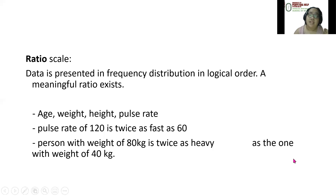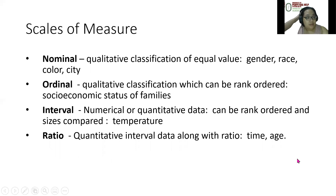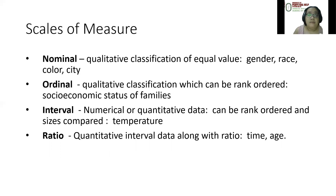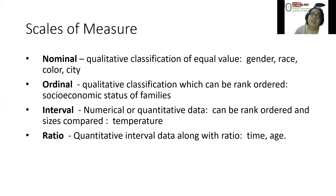Remember the difference between interval and ratio. In summary, nominal is the qualitative classification of equal value — gender, race, color, city. Ordinal is a qualitative classification which can be rank ordered, such as socioeconomic status of families. Interval is numerical or quantitative data which can be rank ordered and sizes compared, such as temperature. And ratio is quantitative interval data along with a meaningful ratio, such as time and age.